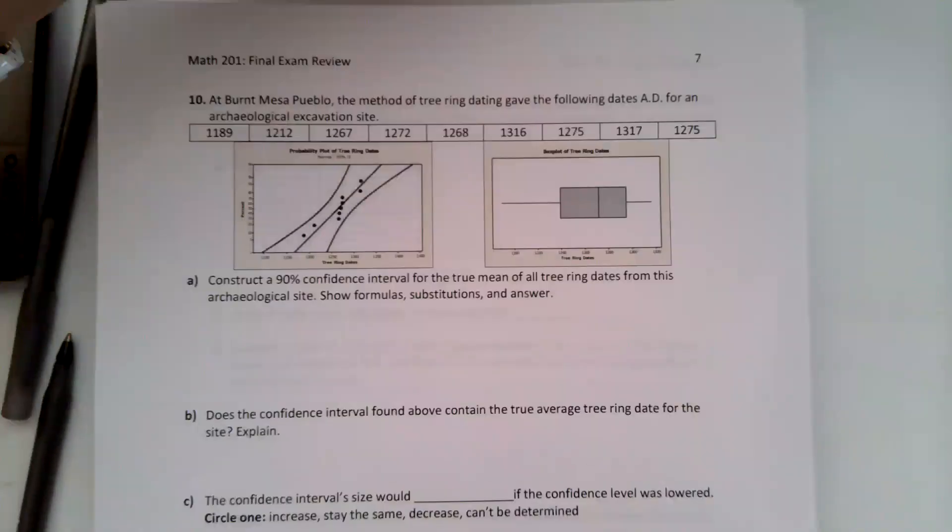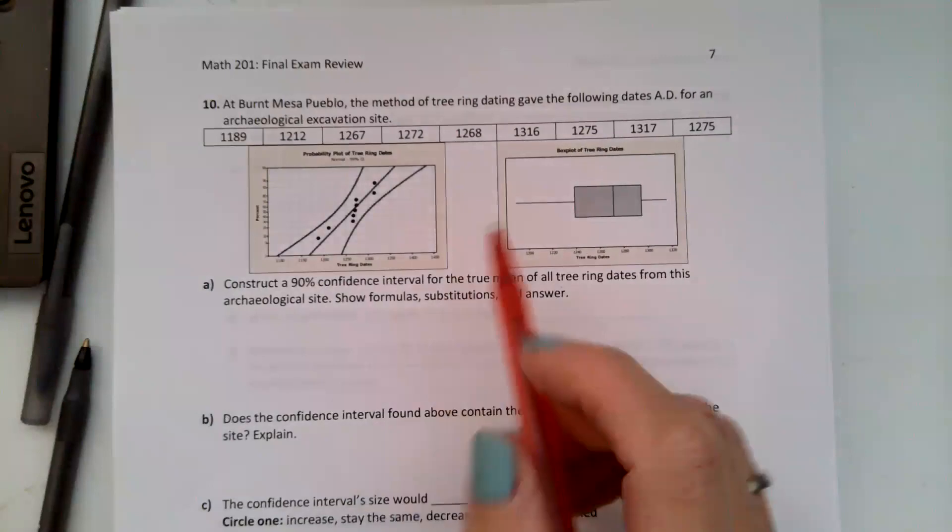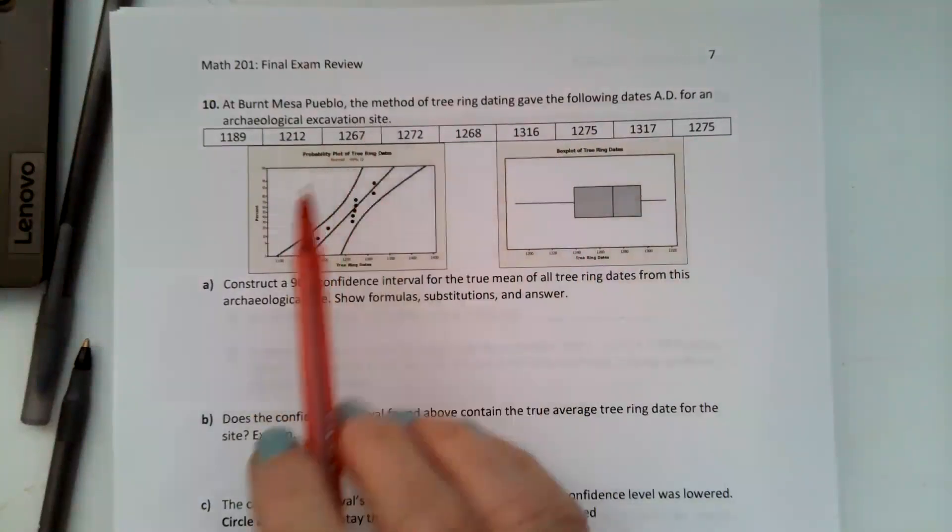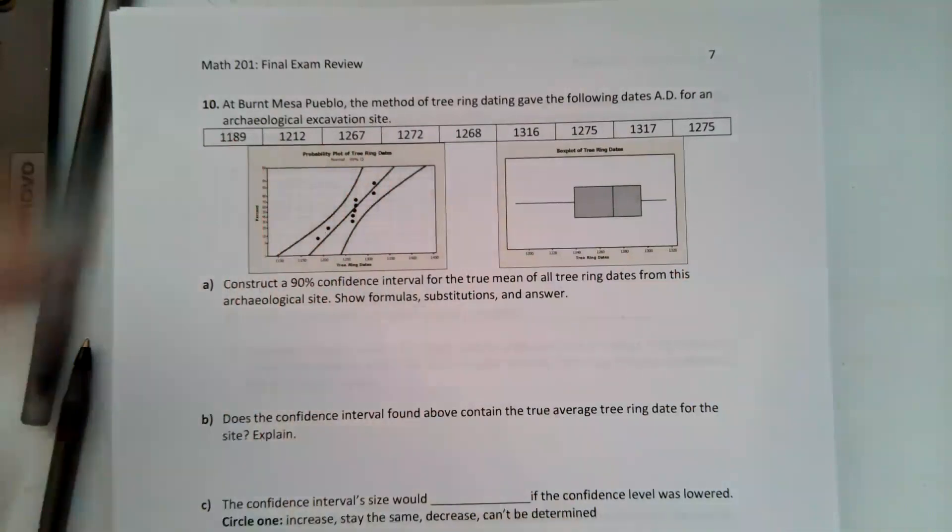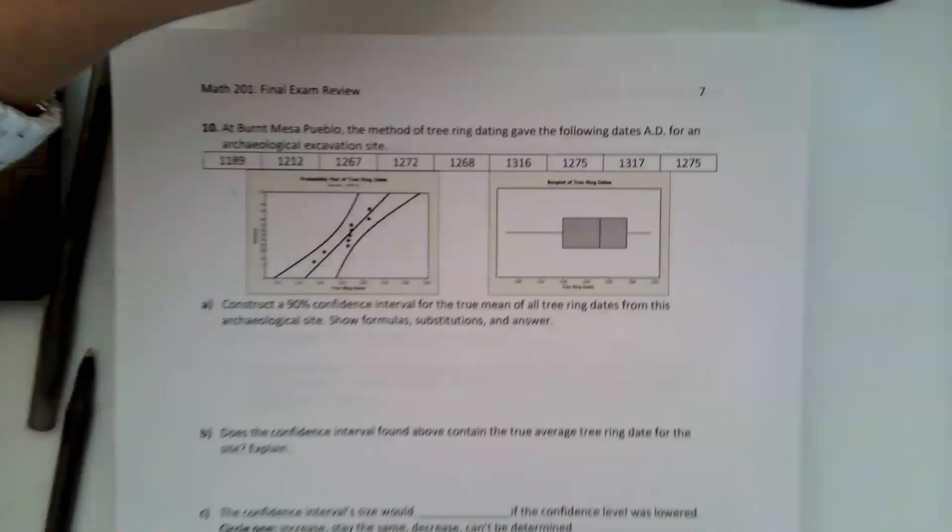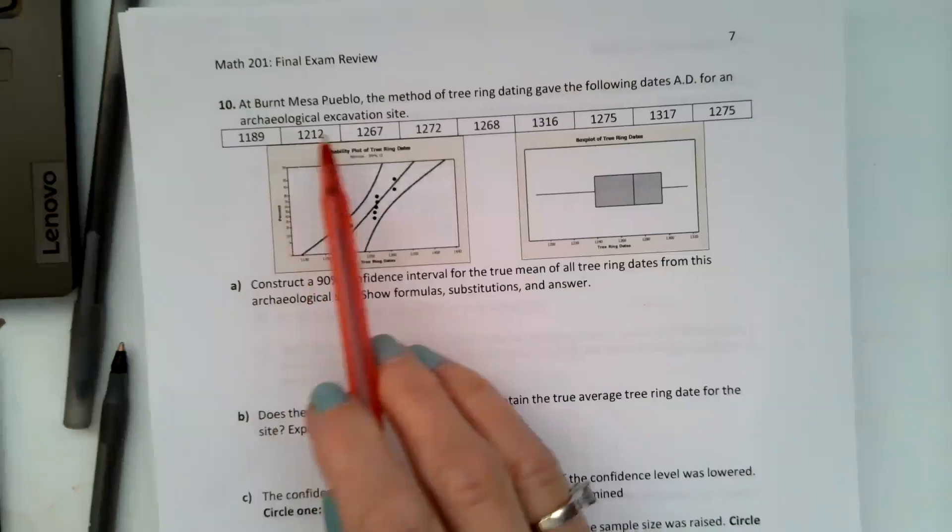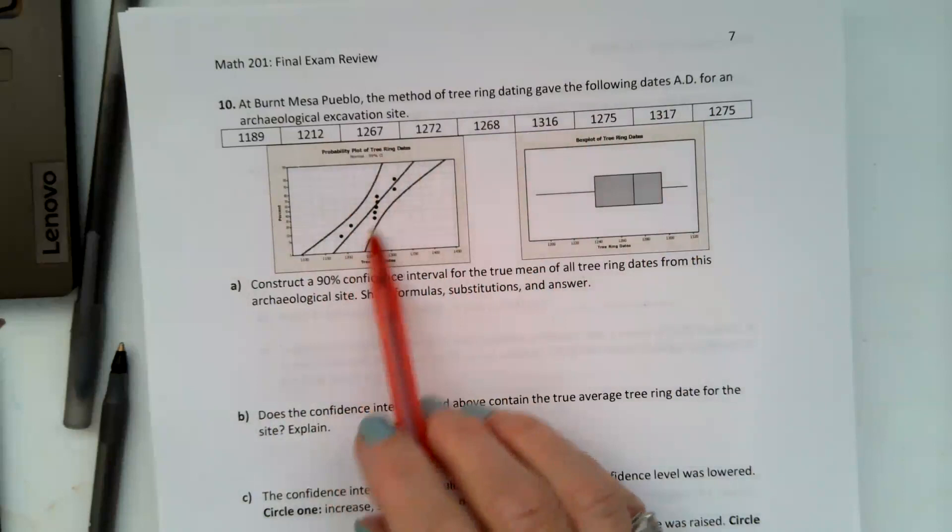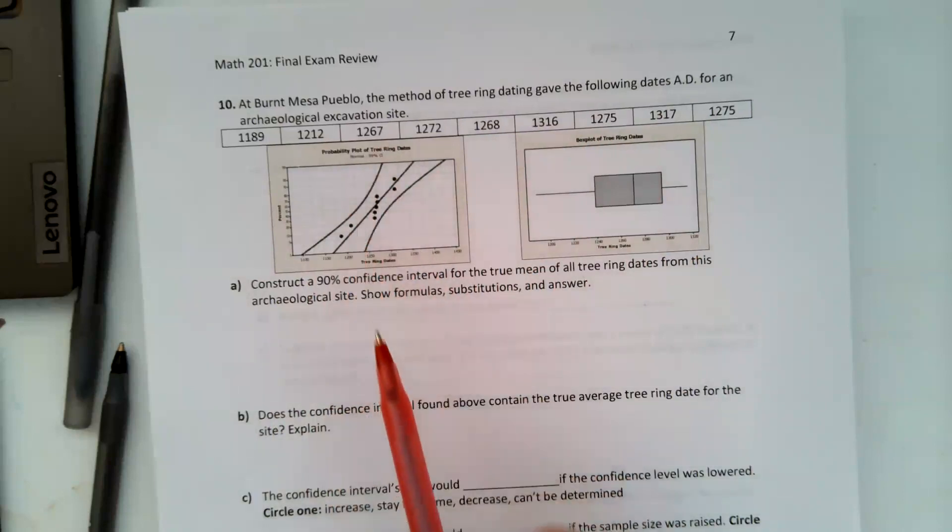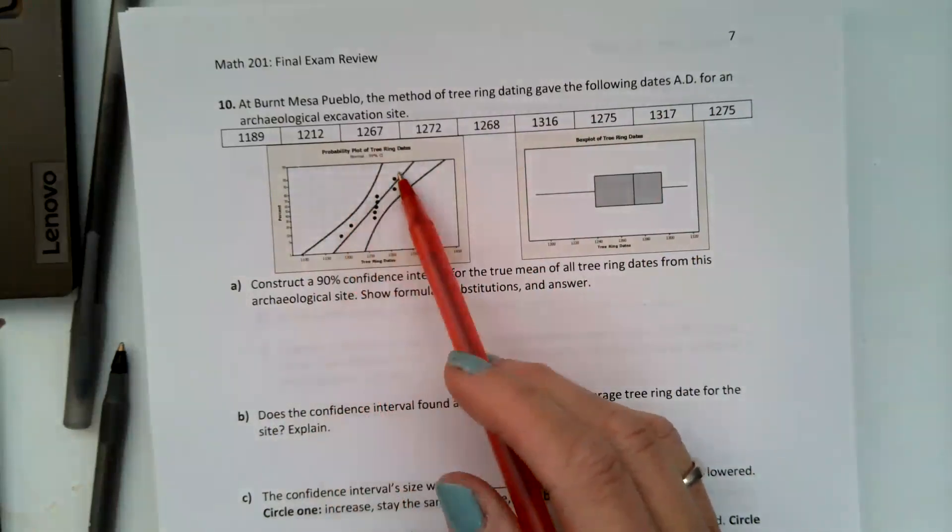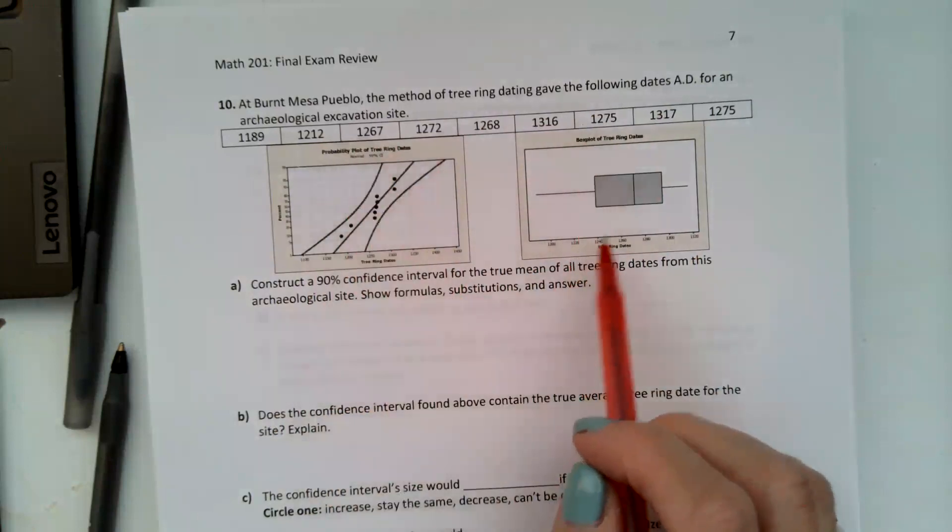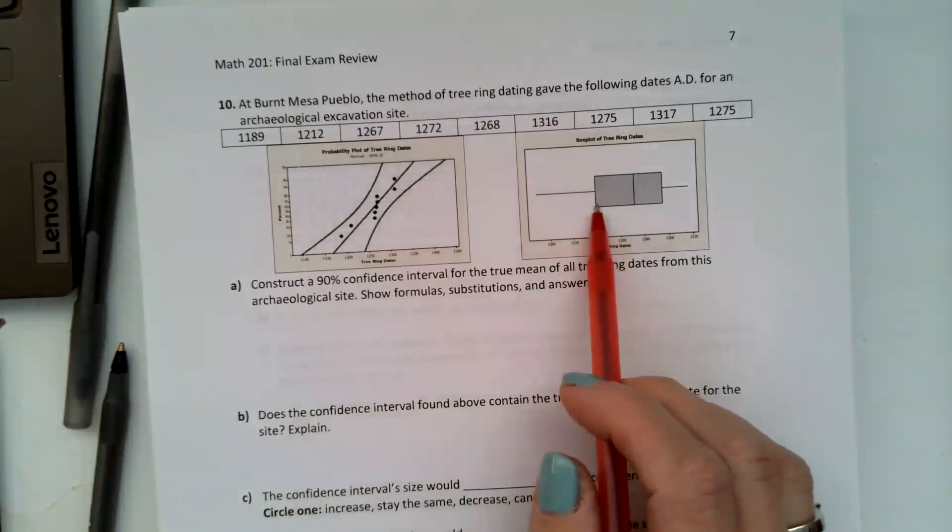Number 10 says the method of tree ring dating gave the following dates AD for an archaeological excavation site. So we have dates here, there are nine of them. They gave us a normal probability plot so we can see that it follows linear, so we can say that the data is normal because it's a small data set and it looks like it's a little bit left skewed.